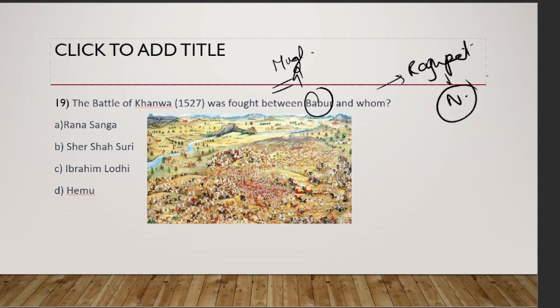Which Rajput confederacy, a powerful kingdom in North India, fought with Babur in the Battle of Khanwa? It was led by Rana Sanga. After that battle, Rana Sanga was defeated, Babur's stature increased, and the political influence of the Rajput confederacy in the region declined.